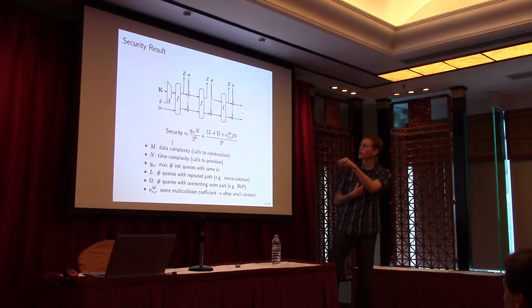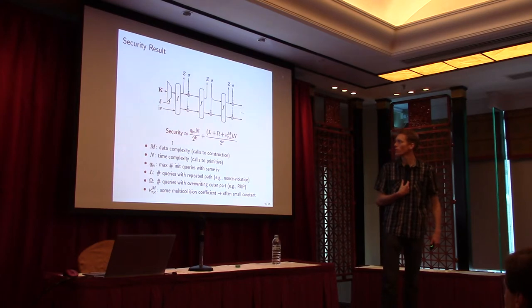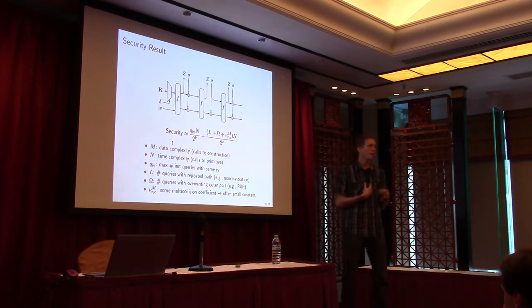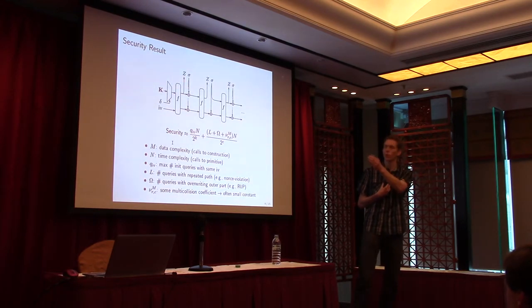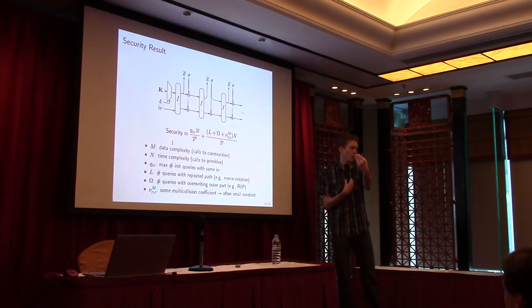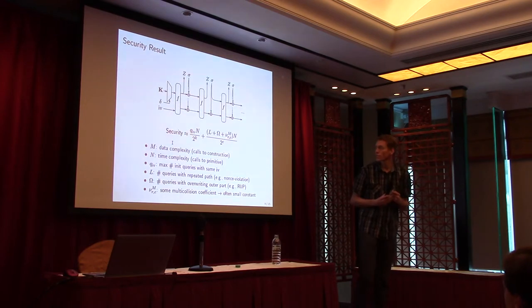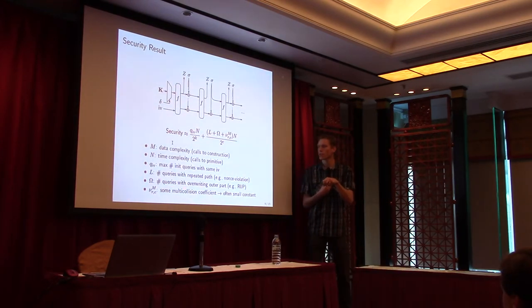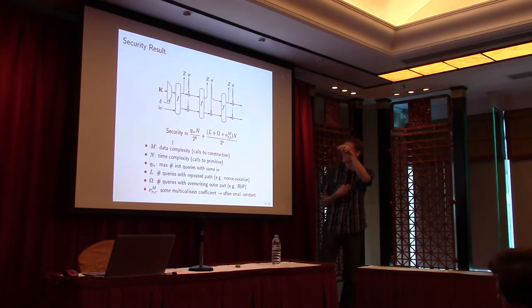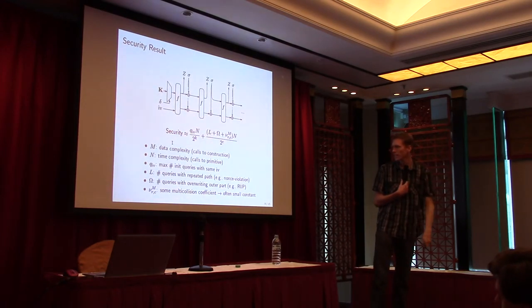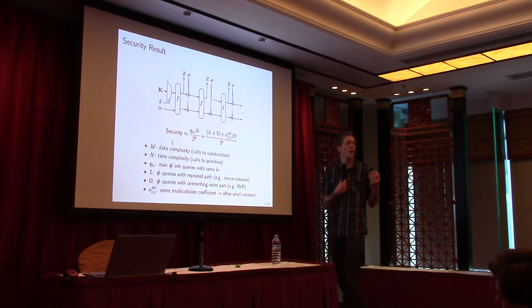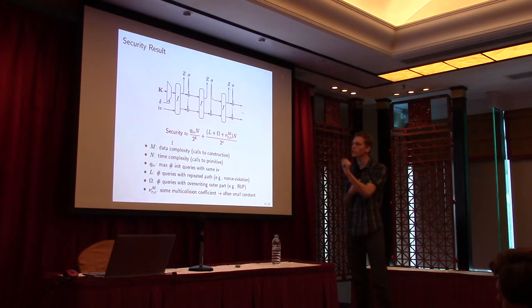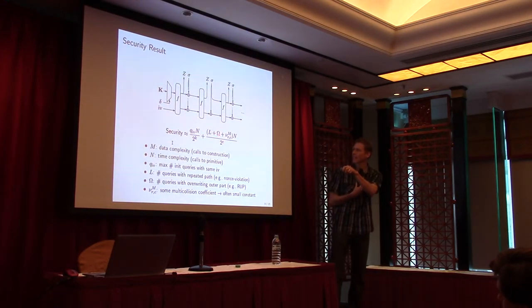For the second term, the old bound had M times N over 2 to the C. Now we get L plus omega plus nu_rcm times N, where L is the number of queries with a repeated path — two queries sharing the same sigma_0 through sigma_4 but diverging at sigma_5. Omega is the number of duplexing calls with an overriding outer part, corresponding to release of unverified plaintext. And nu_rcm is a multi-collision coefficient based on R, C, and M — replacing the adversary-dependent mu. In many cases nu_rcm is a very small constant, and L and omega are the dominating terms.